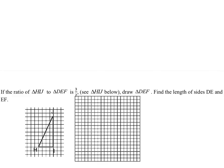If the ratio of triangle HIJ to triangle DEF is 3 to 2, draw triangle DEF. We'll also find the lengths of sides DE and EF, which is going to be so fun.